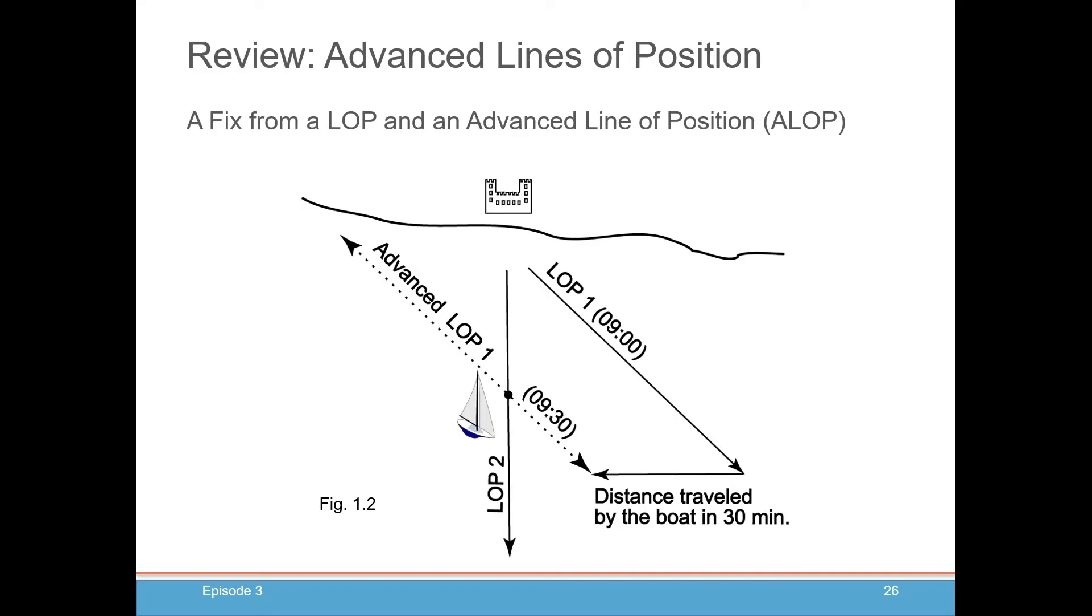Sometimes you only have a single landmark. What you do is advance your line of position. At 0900 hours, you take a bearing on a building, find its back bearing, and draw the line from that building. Then you travel for about 30 minutes, knowing your speed so you can calculate your distance.